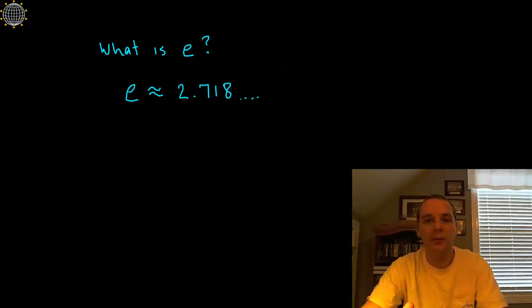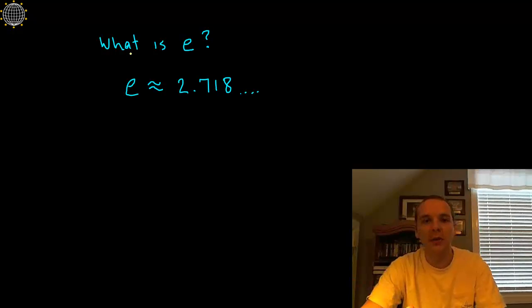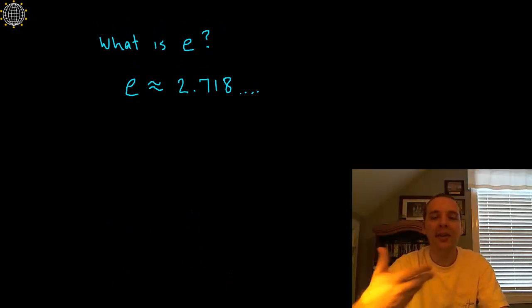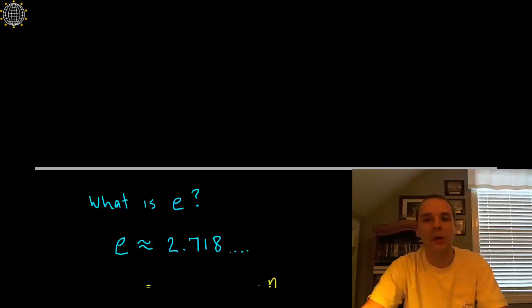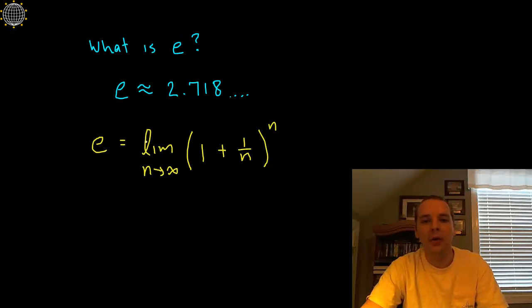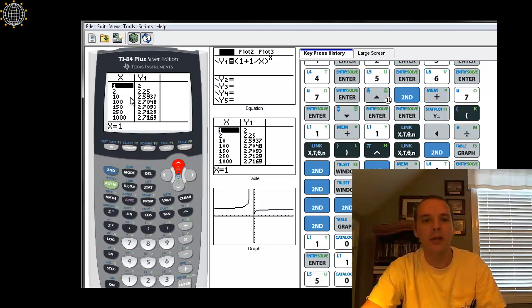What is e? e is a decimal that is never ending: 2.718 and so on and so forth. It continues forever and never repeats in a continuous pattern. How do you get it? It's derived by this limit process where we have 1 plus 1 over n, all raised to the nth power. You might say, where did that come from? We'll explain that in just a minute, but for now I just want to convince you that this really does converge to e.